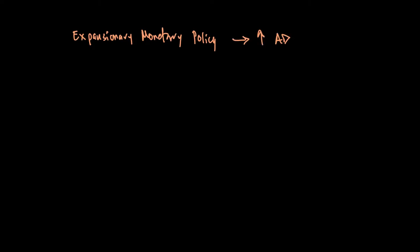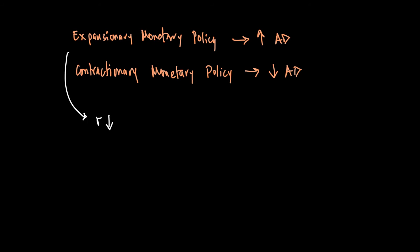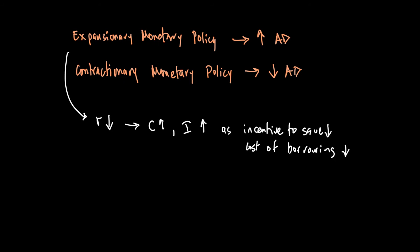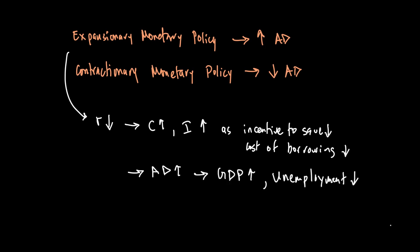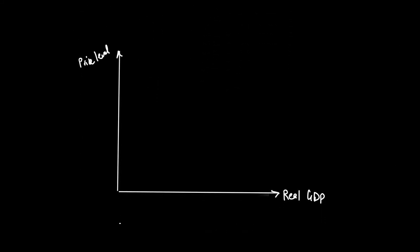Let's look at how expansionary and contractionary monetary policy work. The central bank can use expansionary monetary policy when they want to increase aggregate demand, and contractionary monetary policy when they want to decrease it. Under expansionary monetary policy, interest rates are cut, resulting in consumption and investment going up — because the incentive to save goes down and the cost of borrowing falls — so the AD curve shifts to the right.